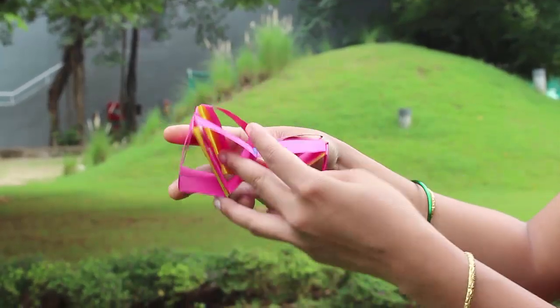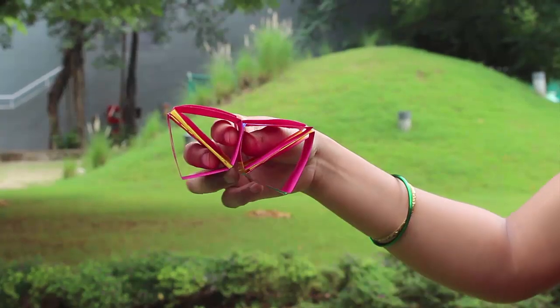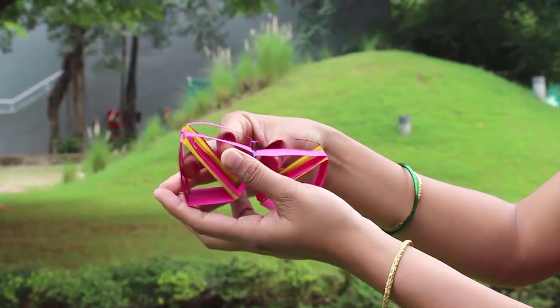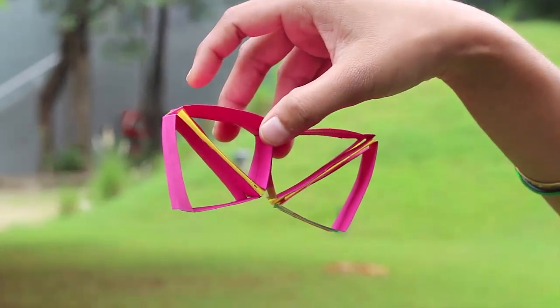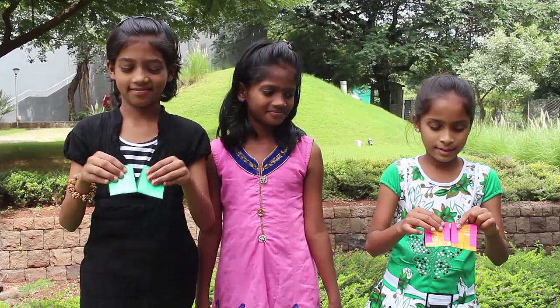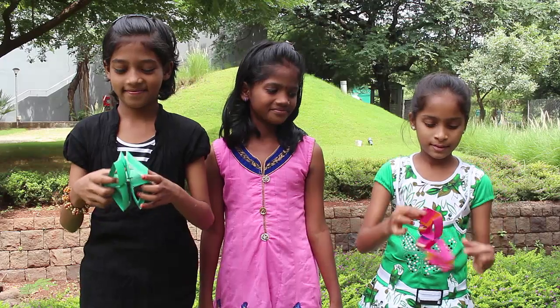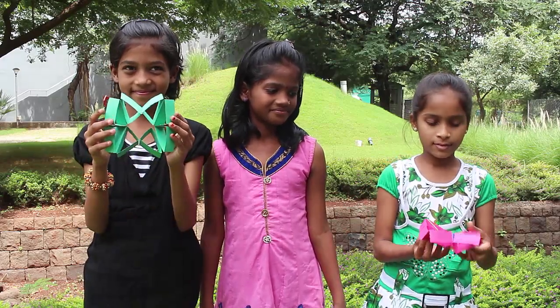So this is a very simple model to make. With 8 strips of paper you make 8 triangles, and then you tape them to make a kind of three-dimensional flexagon which you can flex and enjoy for many hours.